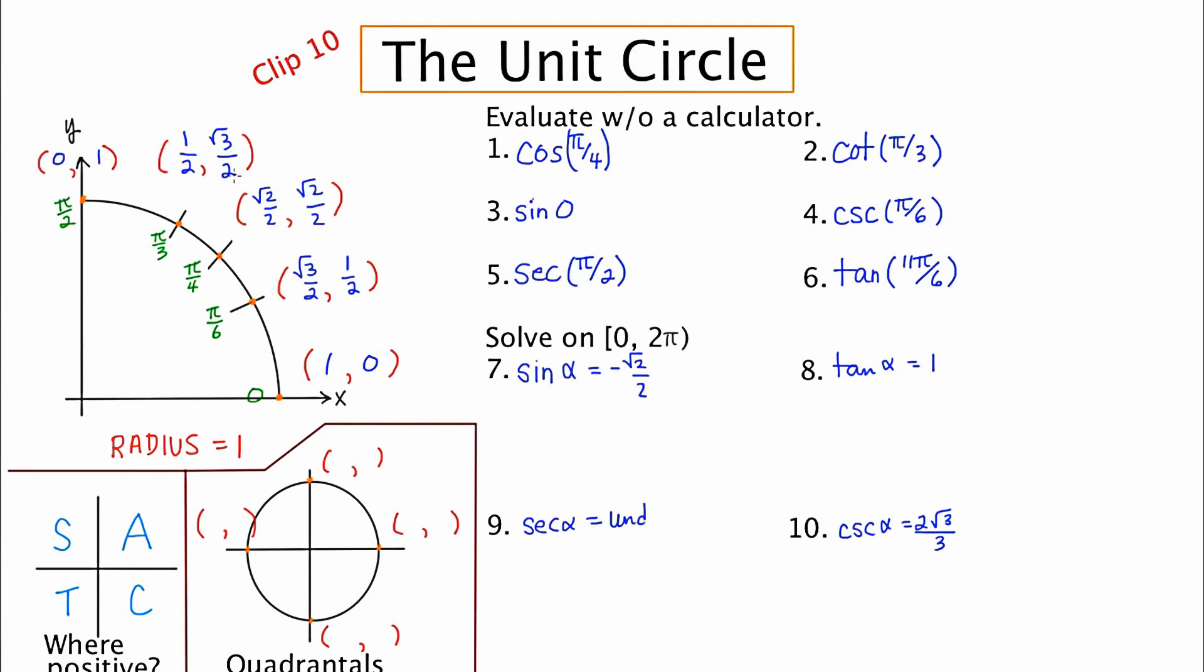So those are your basic ordered pairs that you use to answer questions about any benchmark angle anywhere on the unit circle. If you're in a quadrant other than quadrant one, you just have to appropriately place a negative sign if needed.